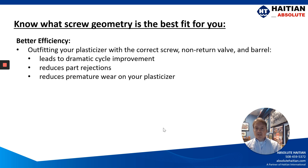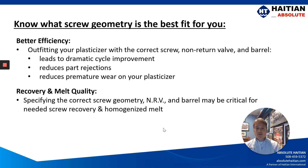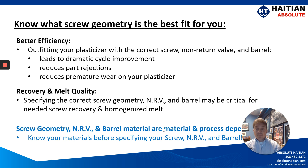Outfitting your plasticizer with the correct screw, non-return valve, and barrel can lead to a dramatic cycle improvement, reduces part rejections, and reduces premature wear on your plasticizer. Specifying the correct screw geometry, non-return valve, and barrel may be critical for the needed screw recovery and the homogenized melt. So know your materials before specifying your screw geometry, non-return valve, and barrel when talking to your machine supplier.